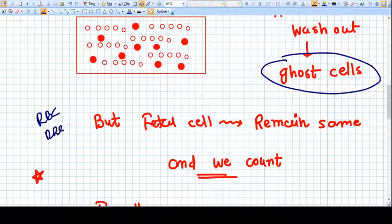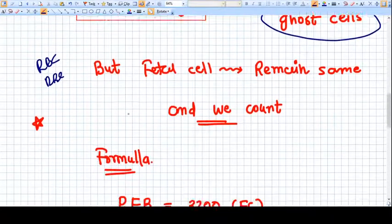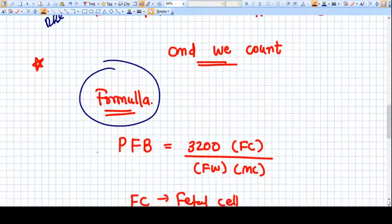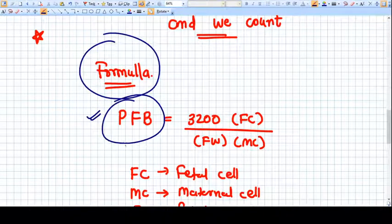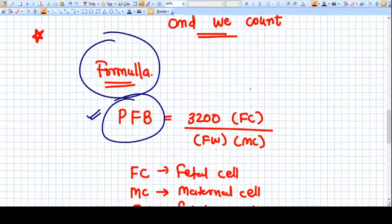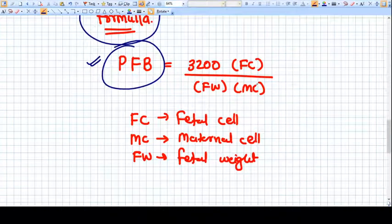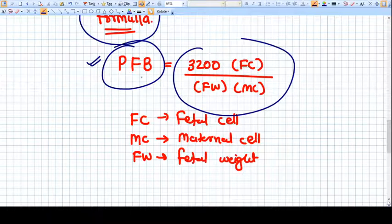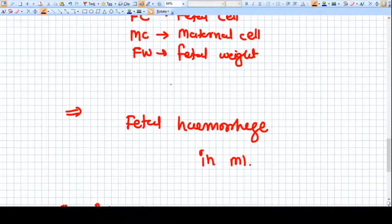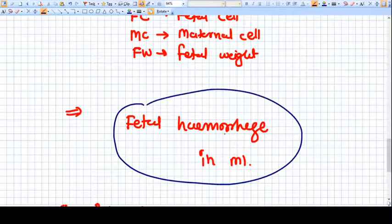Now what we do? We do the count, the comparative count of RBC of fetus and RBC of the adult, that is mother. We have certain formulas and this is an example of the formula. This is fetal blood, that means lost fetal blood, that is equal to the maternal fetal hemorrhage. By applying this formula, we get the fetal hemorrhage in milliliters.